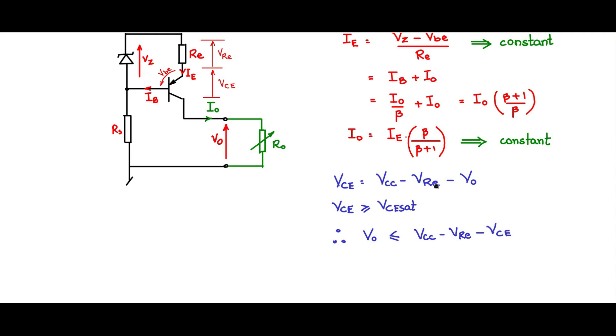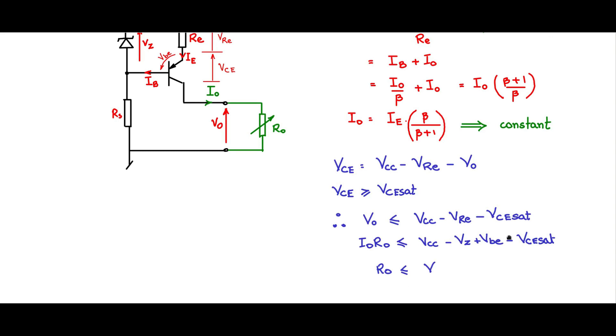If you apply this relationship here, that this value should be greater than VCE sat, V naught will be less than. What is V naught? V naught is nothing but I naught into R naught, that should be less than VCC minus VZ plus VBE because VRE is nothing but VZ minus VBE and minus VCE sat. And therefore R naught should be less than VCC minus VZ plus VBE minus VCE sat divided by I naught. And that is the limiting value R naught max that you can go up to.